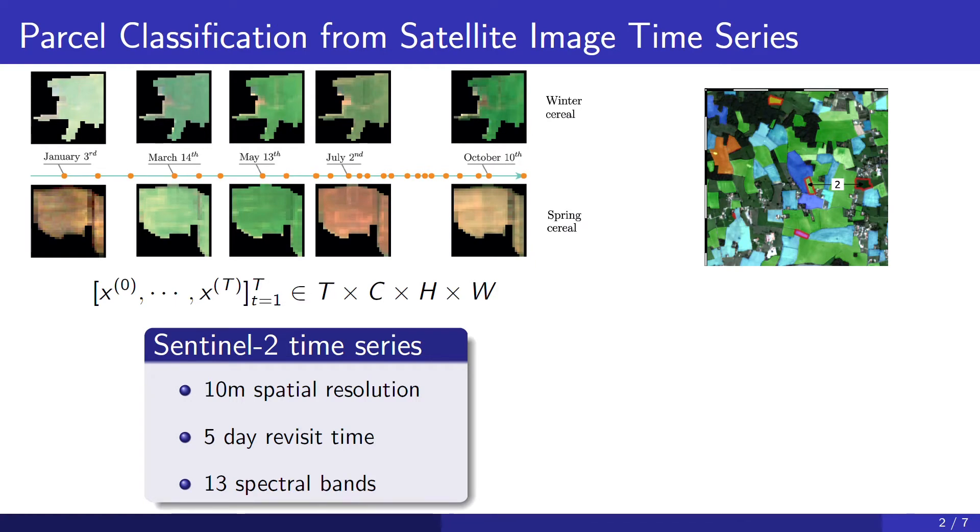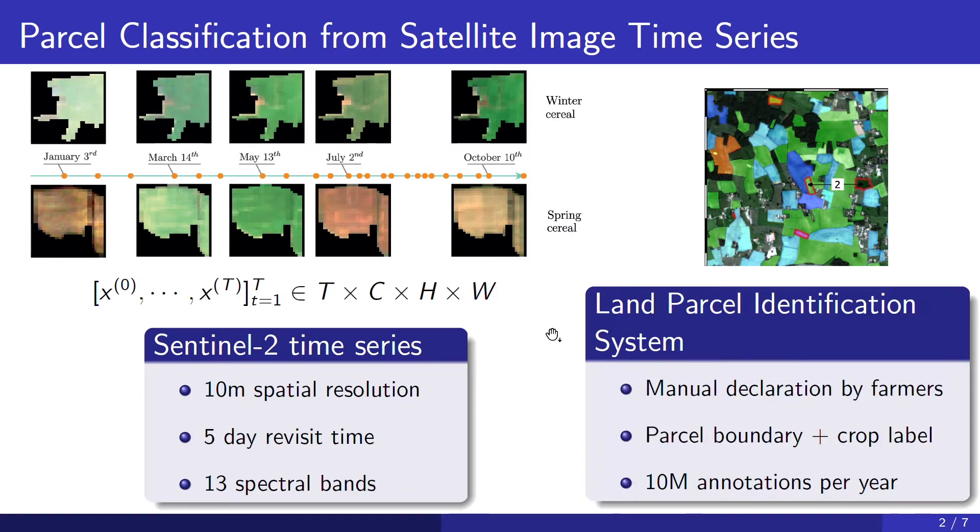Now the good news about our classification task is that in some countries such as France, farmers manually annotate on a map the borders of their parcels as well as a crop type label, and they do so every year, which results in a huge volume of publicly available annotated data. Our task then is to classify those crop types based on the observed Sentinel-2 time series.